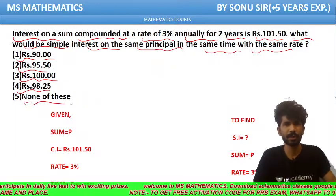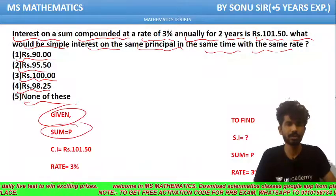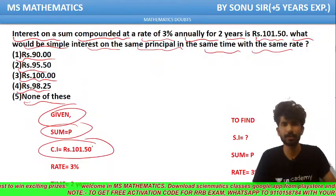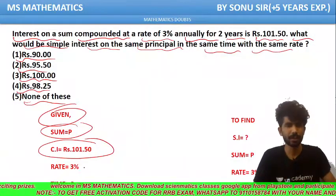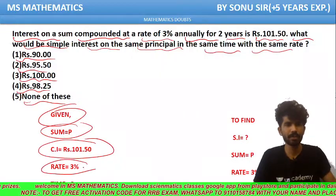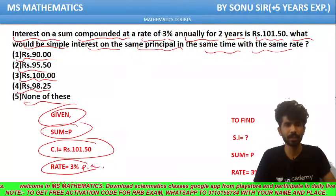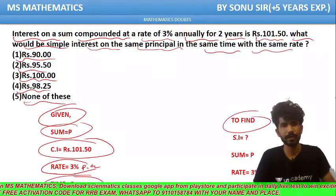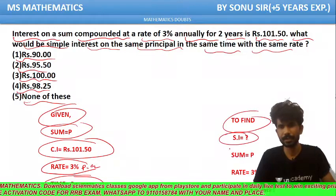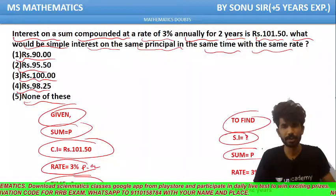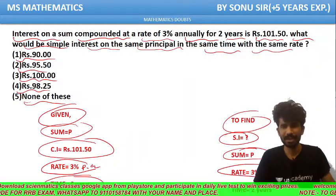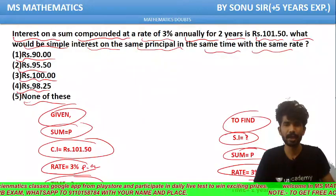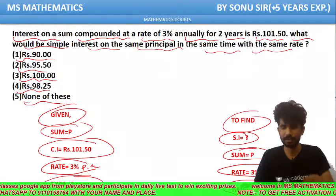We have been given the following data: the sum is equal to the principal, and compound interest is equal to Rs. 101.50. Rate is equal to 3% per annum and time is equal to 2 years. We have to find the simple interest on the same sum, at the same rate of 3% per annum, in the same time of 2 years.